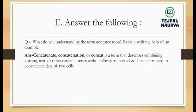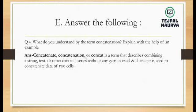Concatenation, or concat, is a term that describes the combination of strings, tags, or other data in a series without any gap. In Excel, the ampersand character (&) is used to concatenate data of two cells. Concatenation means combining any text or data together — joining them without any gap between them.